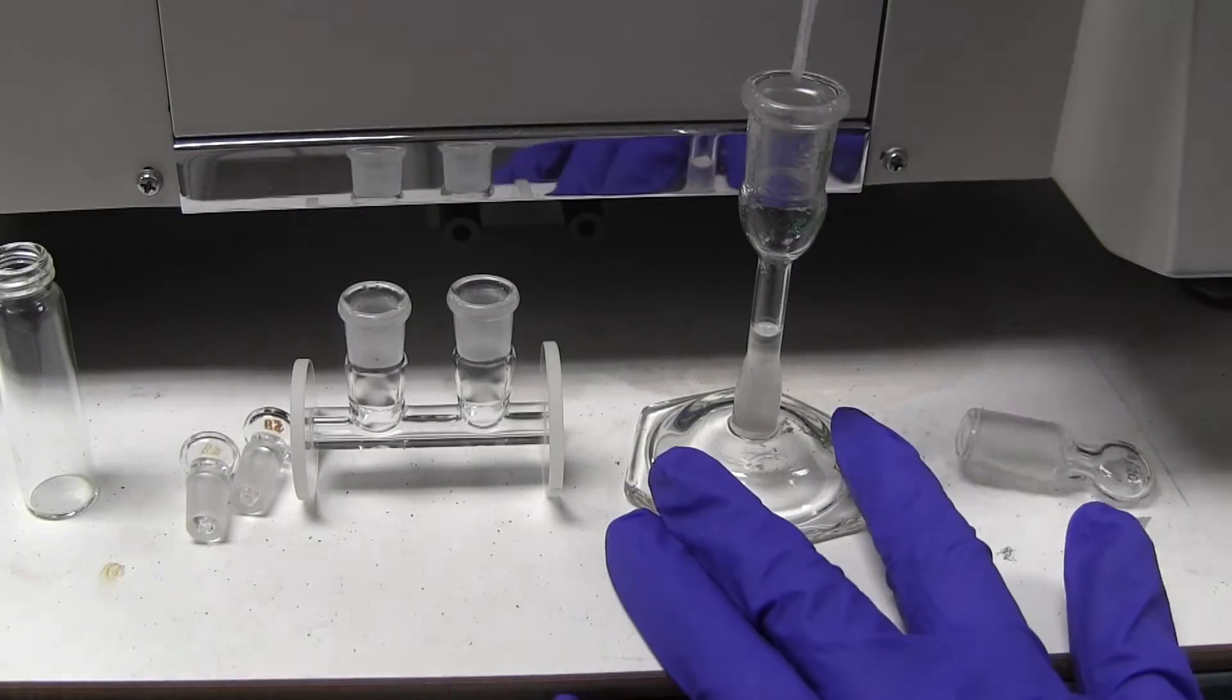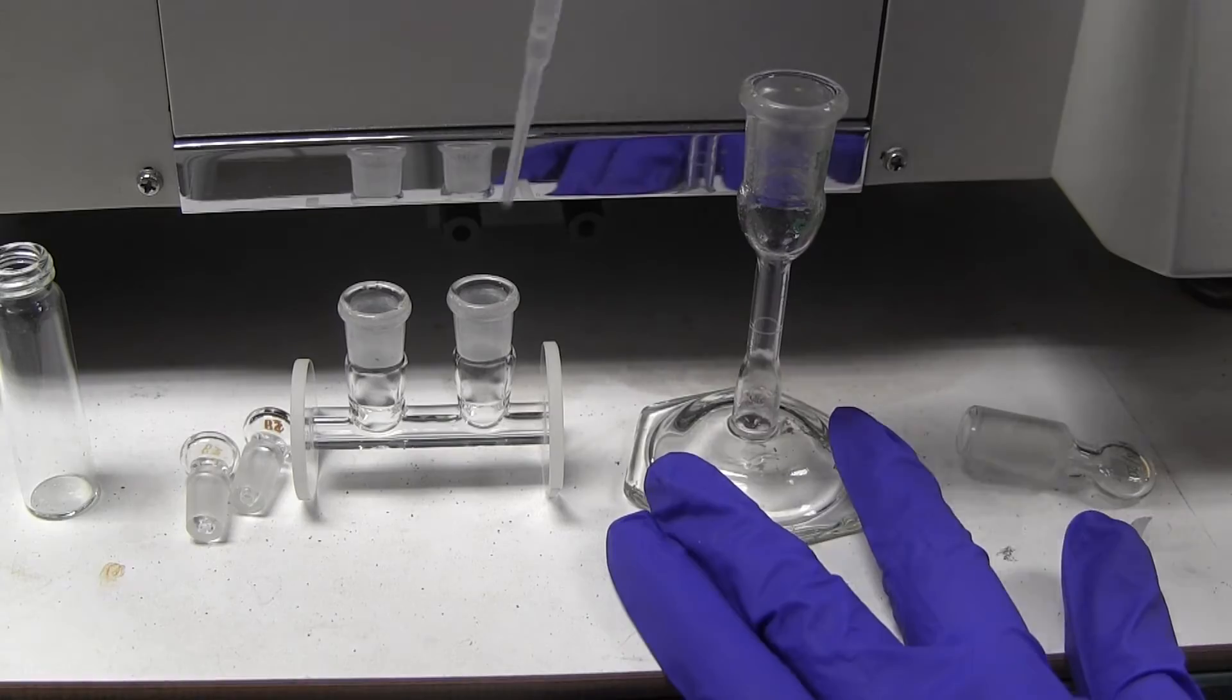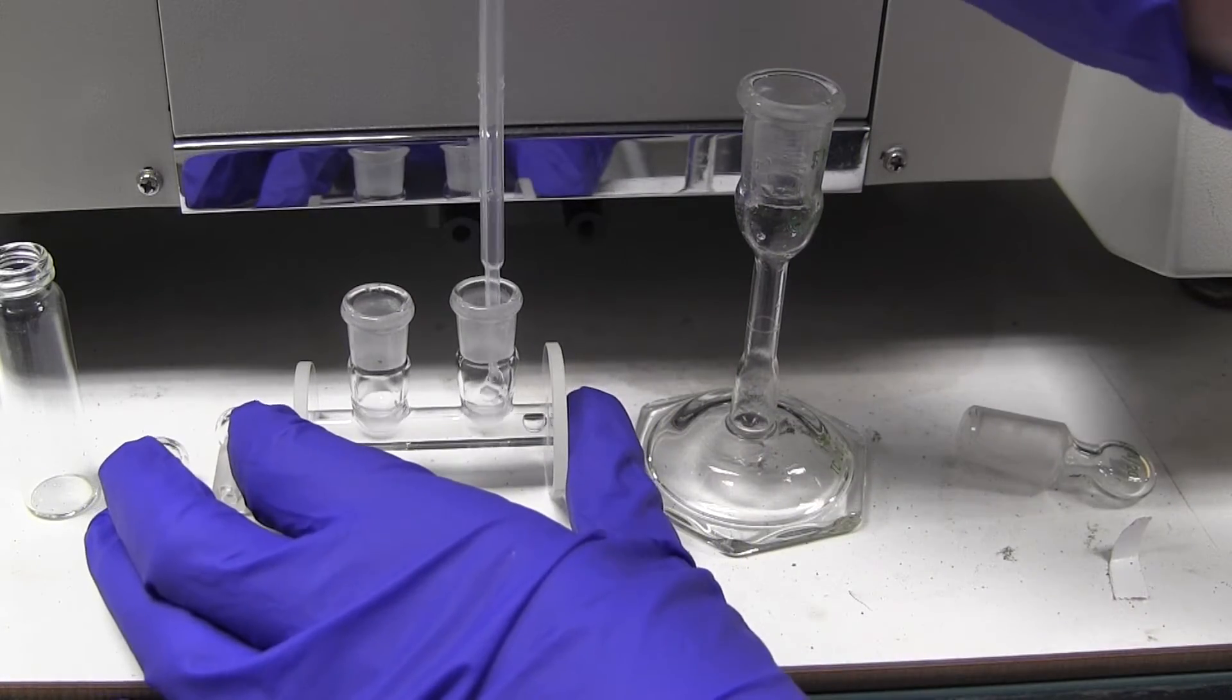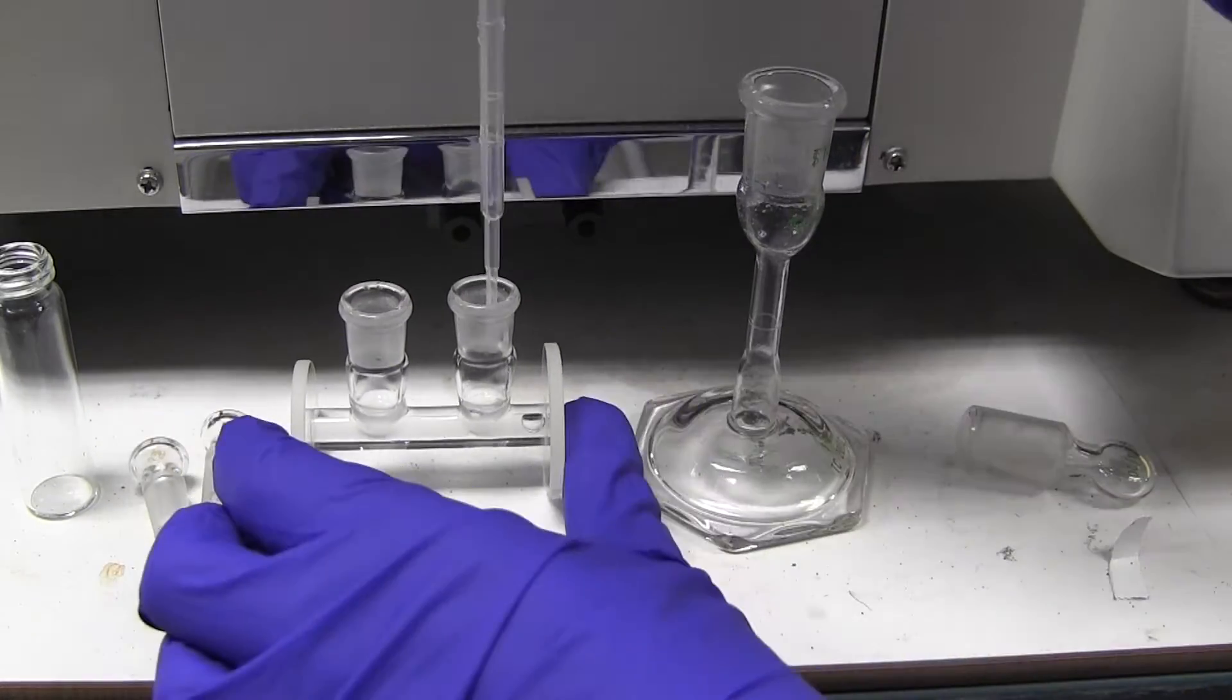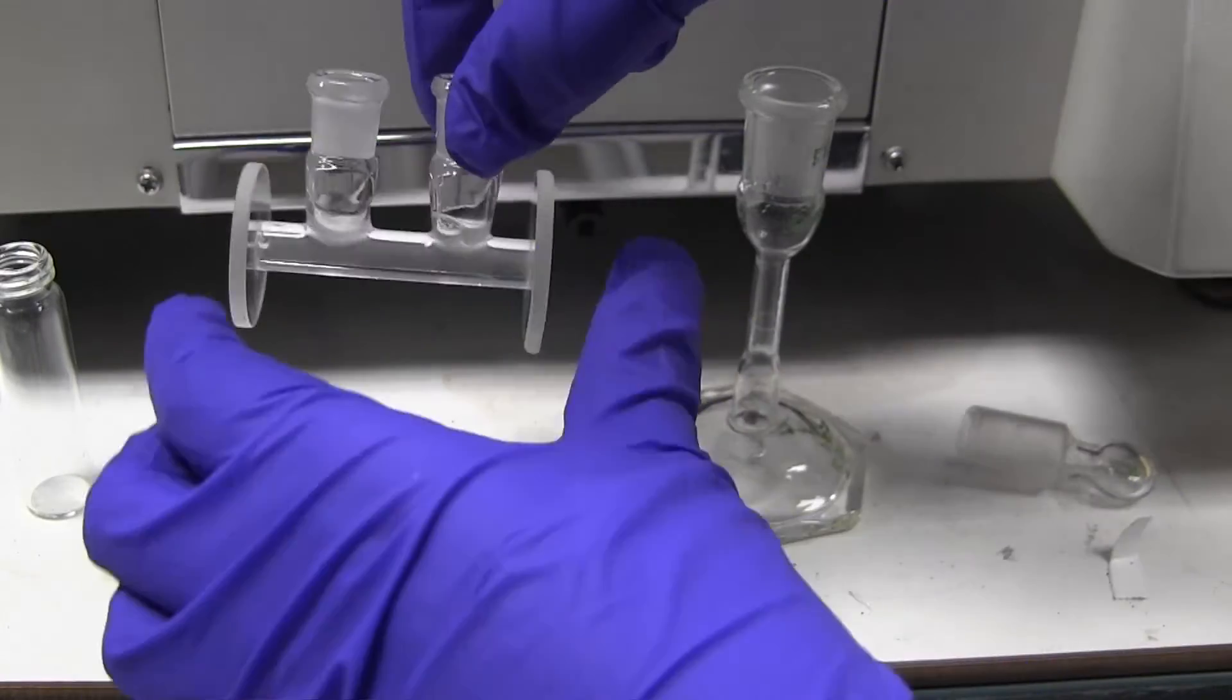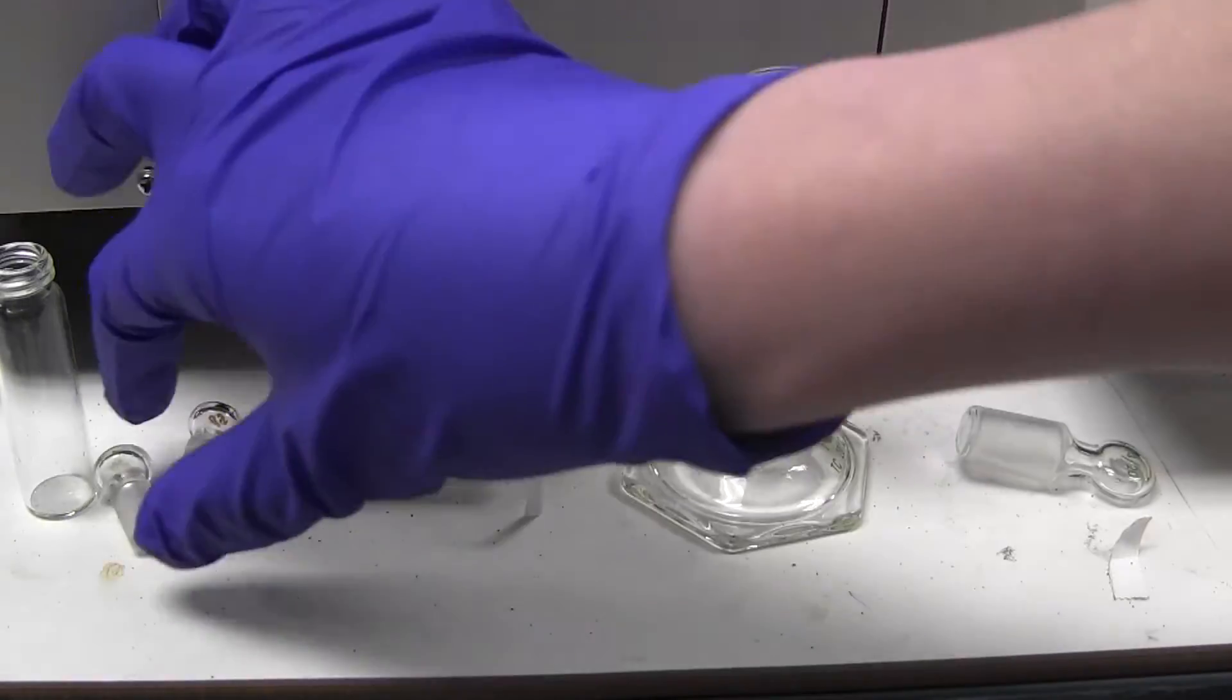Transfer this solution into one of the polarimeter cells and make sure that there aren't any bubbles in the tube. Be very careful with these cells, they are very expensive. Make sure there aren't any fingerprints or other marks on the ends of the cell as well.